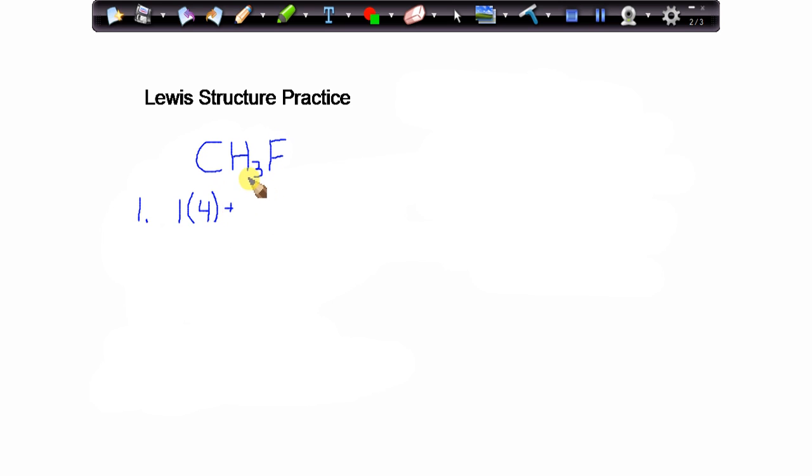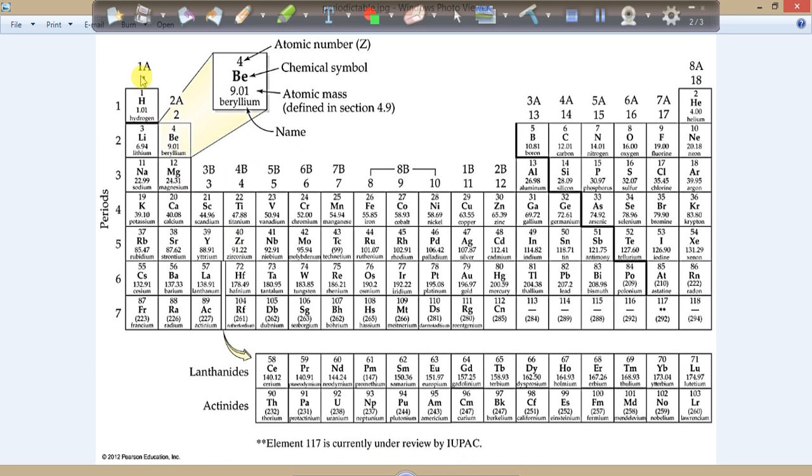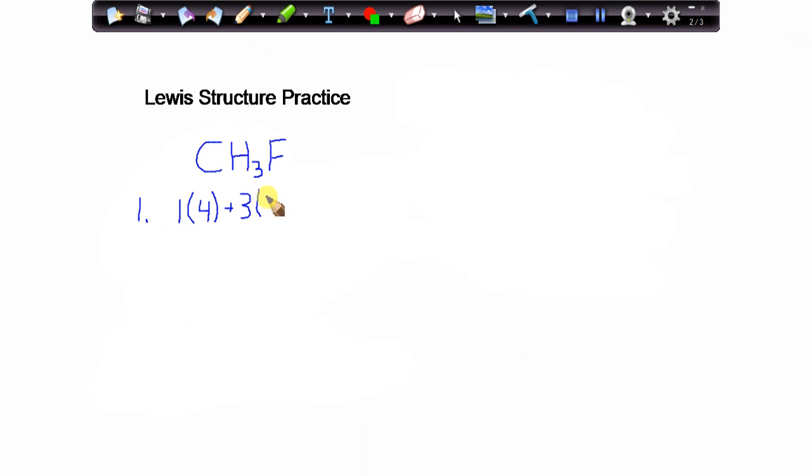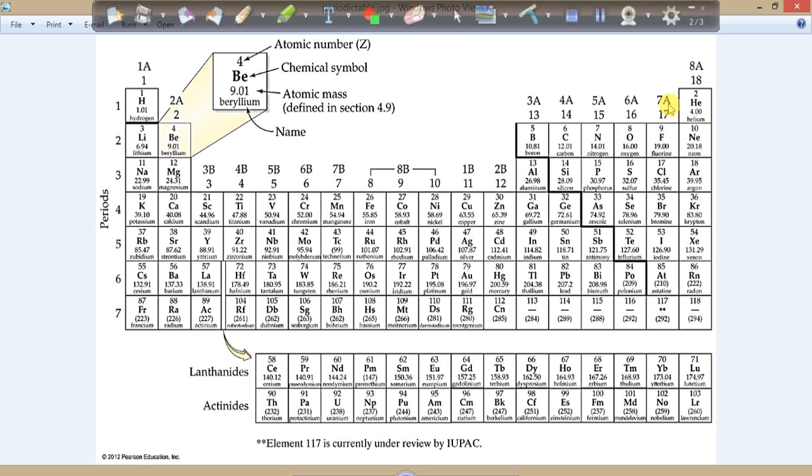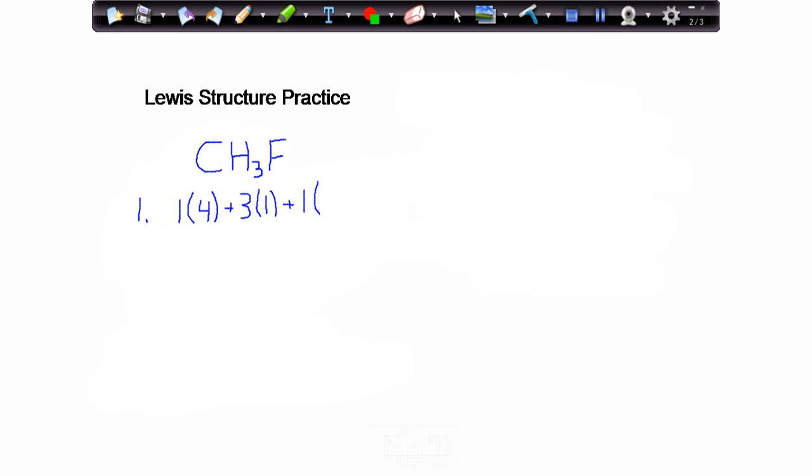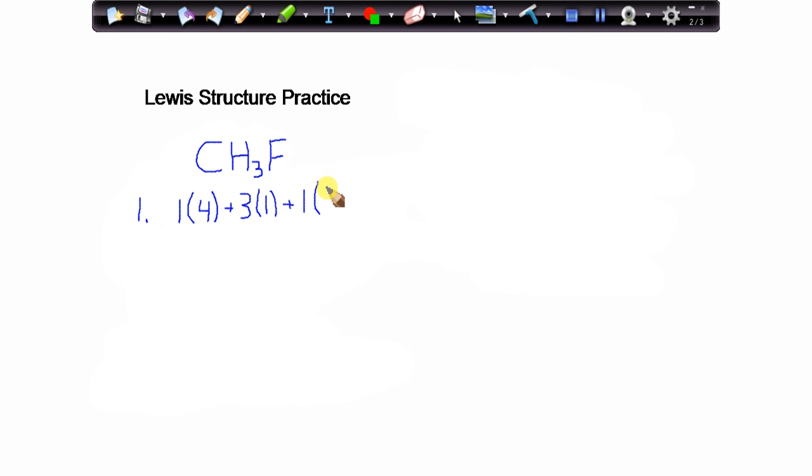So one times four, one carbon times four valence electrons each, plus three hydrogens. Hydrogen is in group 1A. Because hydrogen is in group 1A, each hydrogen atom will contribute one valence electron. And then finally, the fluorine, we have just the one fluorine atom. The one fluorine atom, because fluorine is in group 7A, the fluorine atom contributes seven valence electrons. The group number is the same as the number of valence electrons. So then step one, counting how many total number of valence electrons I have in this molecule, would be four plus three plus seven, or a total of 14 valence electrons.